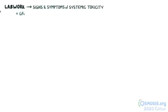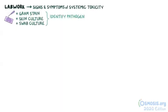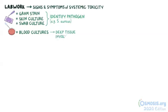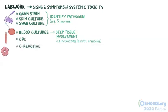Additional lab work should be done when there are signs and symptoms of systemic toxicity. A gram stain, skin, and swab cultures can help identify a specific pathogen like community-acquired methicillin-resistant S. aureus. Blood cultures are unlikely to be positive in simple localized infections like impetigo and folliculitis, but should be taken when there is deep tissue involvement like necrotizing fasciitis or erysipelas. Other tests include a CBC, C-reactive protein level, and liver and kidney function tests.